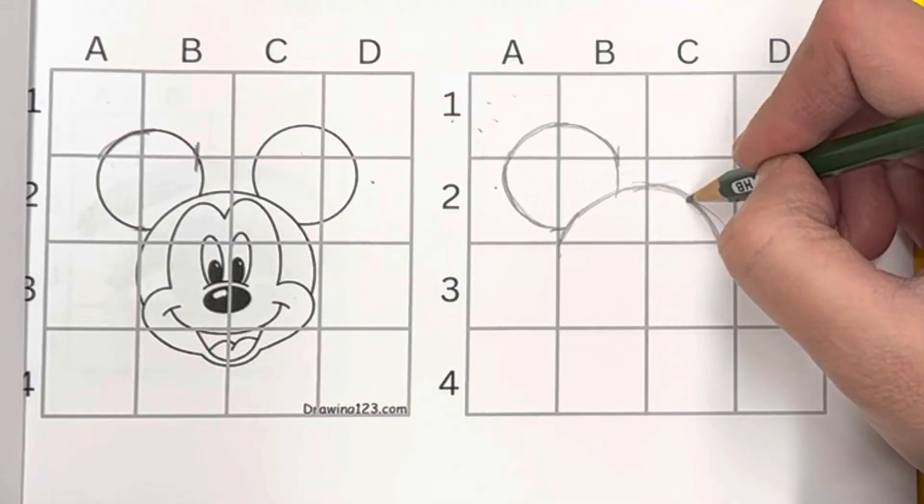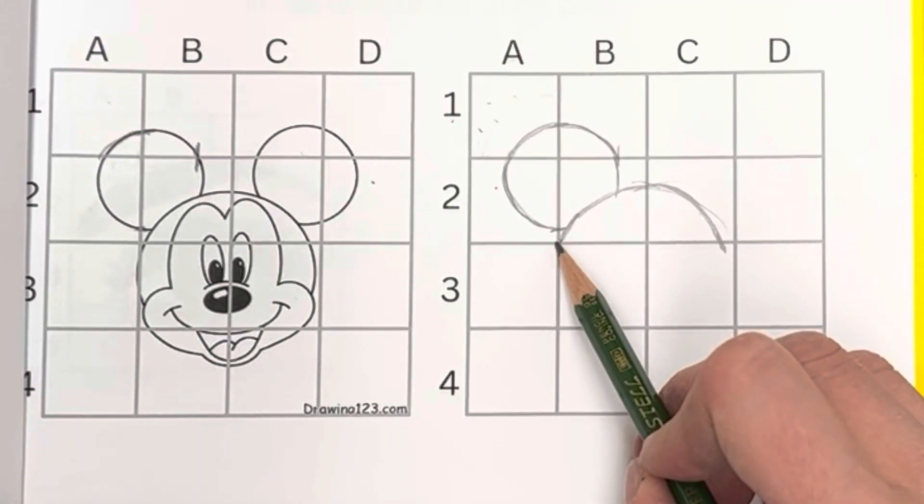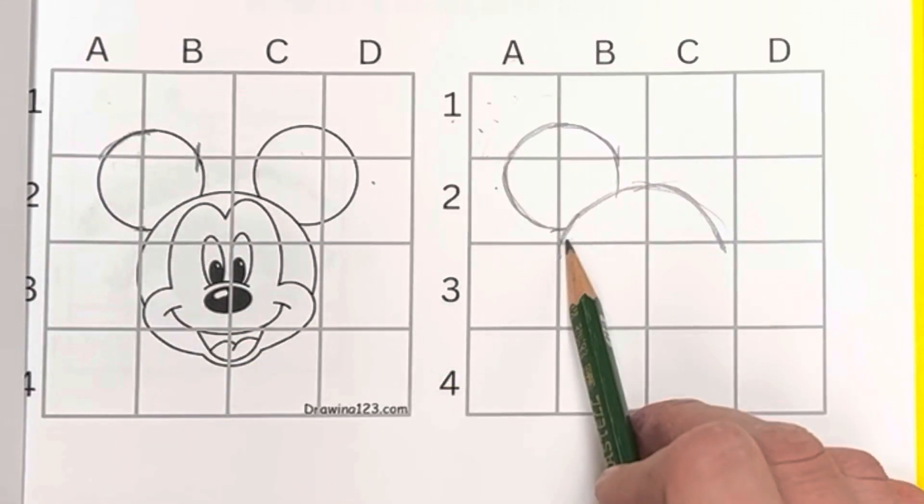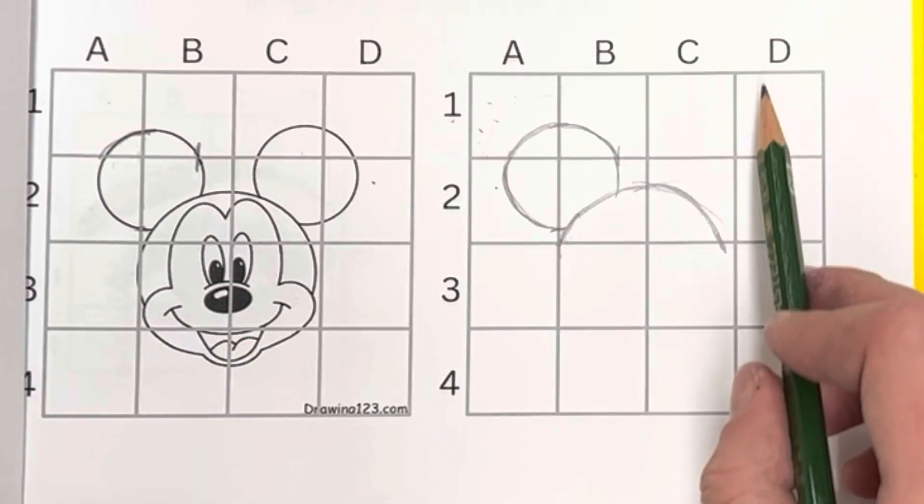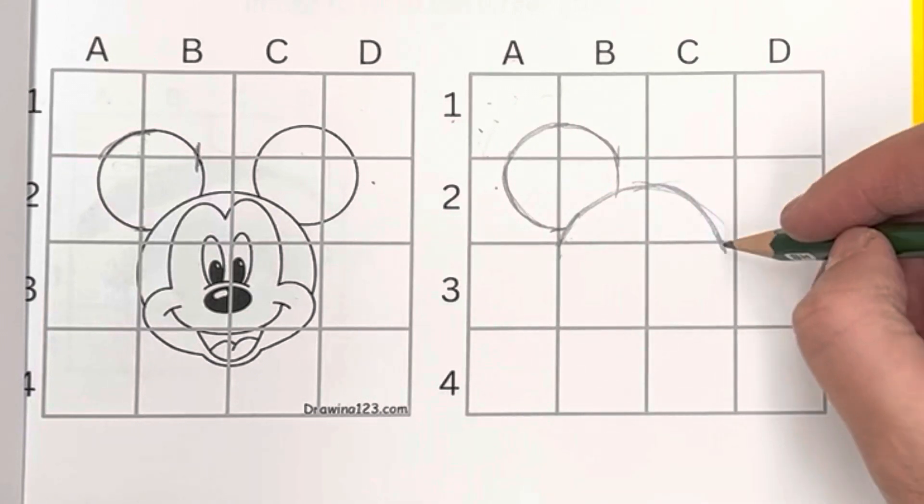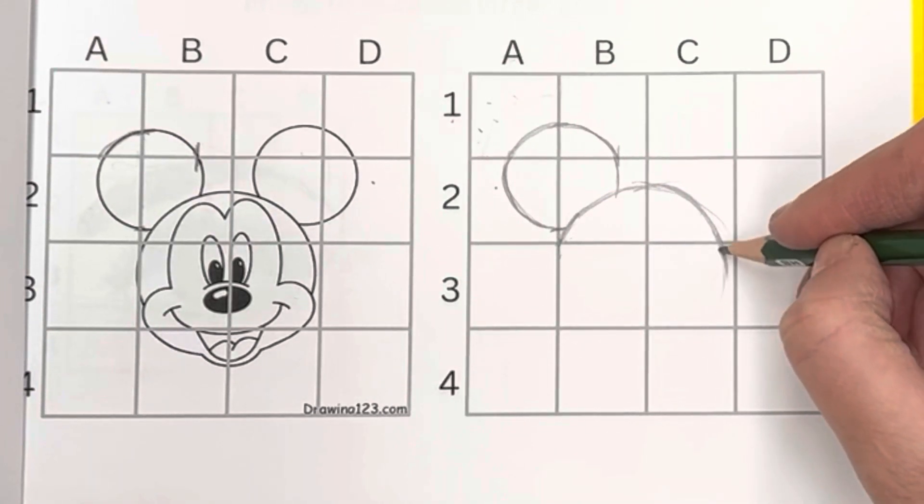It starts right here and then it comes over and crisscrosses before it even hits D. It's crisscrossing over.